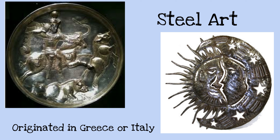The next type of art we're going to talk about is steel art. They used different kinds of metals in Greece and Italy, and they would make art with steel. So instead of just having a flat piece of steel, they would press things into the art, or they would cut it — like you can see with the sun and the moon on this side. They would cut it so that it's different lengths, making the art stick out more. On the left, you can see they pressed into it with some type of machine so that it sticks out.